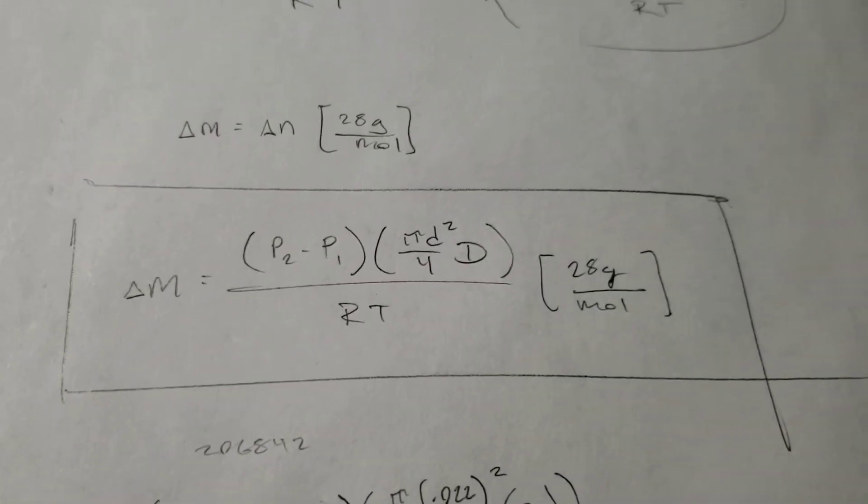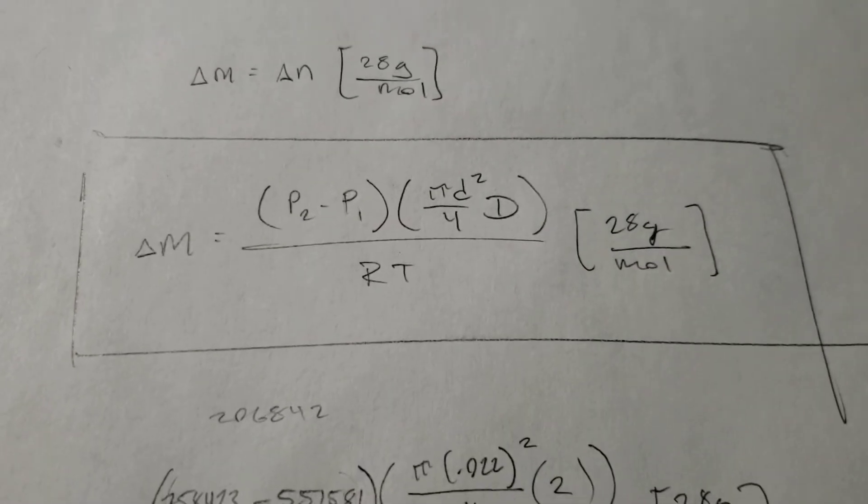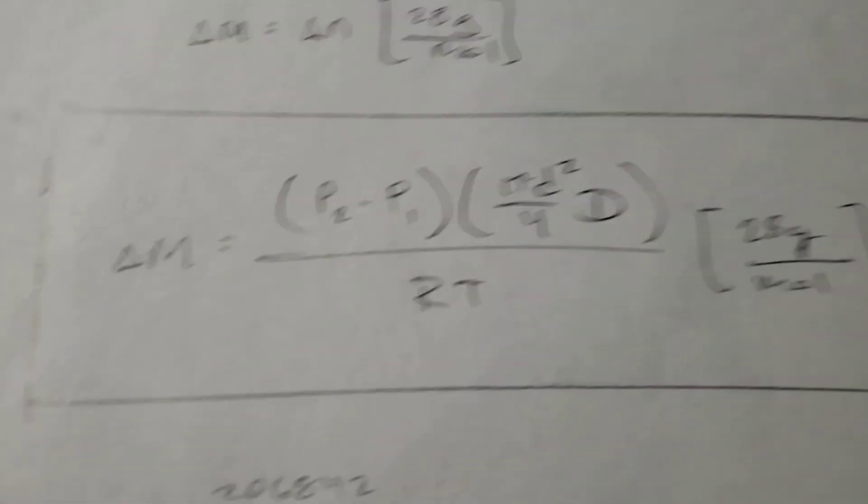Alright, so this is the answer. We know it's the answer because we have what we want, change in mass, written only in terms of what we know. So, all these are known quantities.